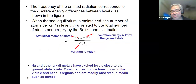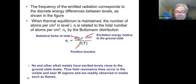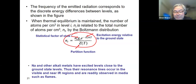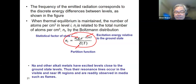When thermal equilibrium is maintained, the number of atoms per cubic centimeter in level i — that's Nᵢ — is related to the total number of atoms per cubic centimeter Nₜ by the Boltzmann distribution: Nᵢ = Nₜ · gᵢ · e^(−Eᵢ/kT) divided by the partition function Z(T).